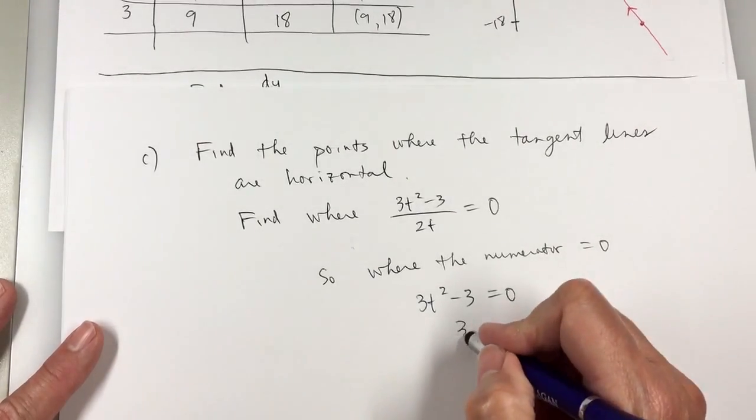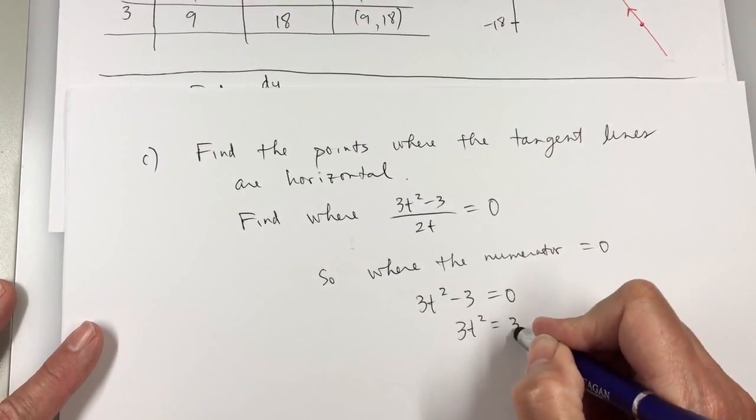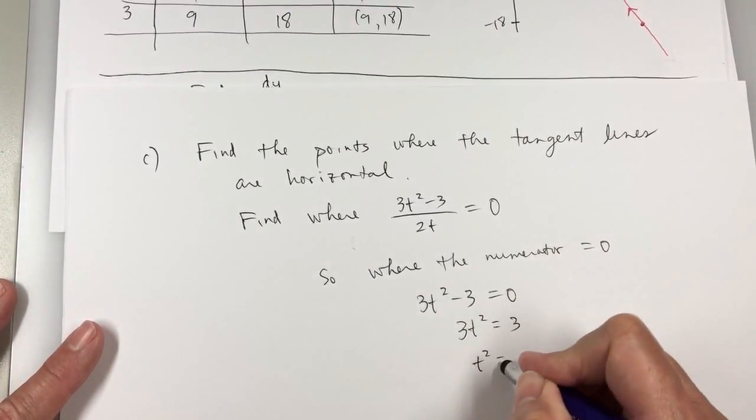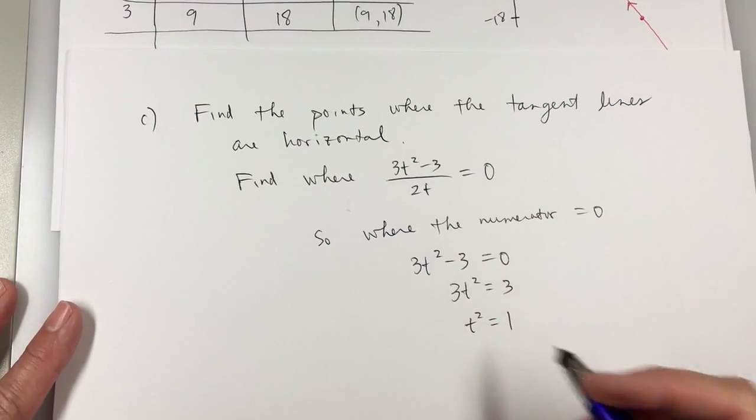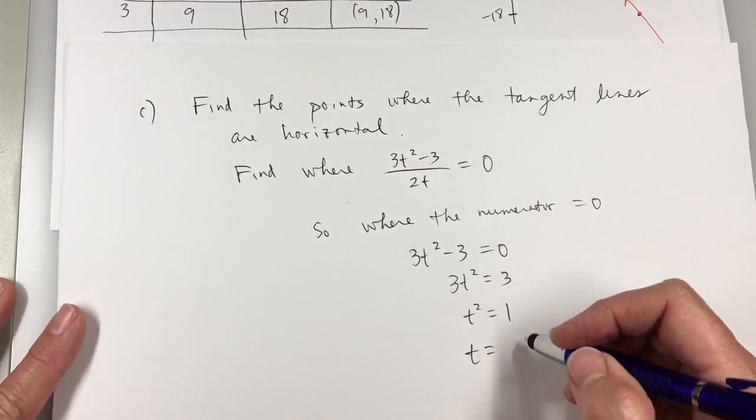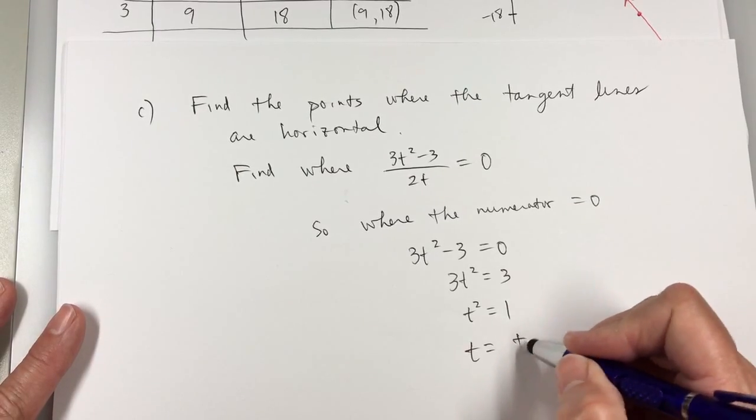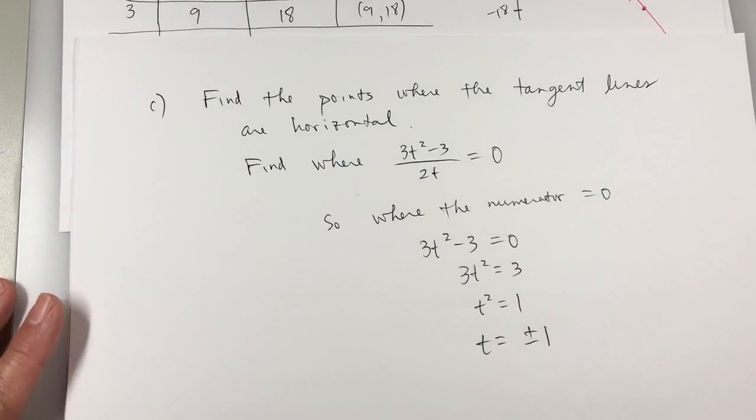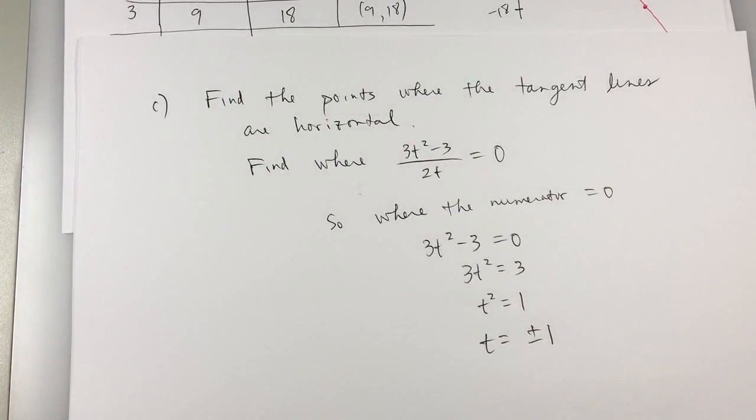So you add 3 to both sides. 3t squared is 3. Divide by 3. T squared is 1. So square root, when t is 1 and when t is negative 1, that's when I have a horizontal tangent line.